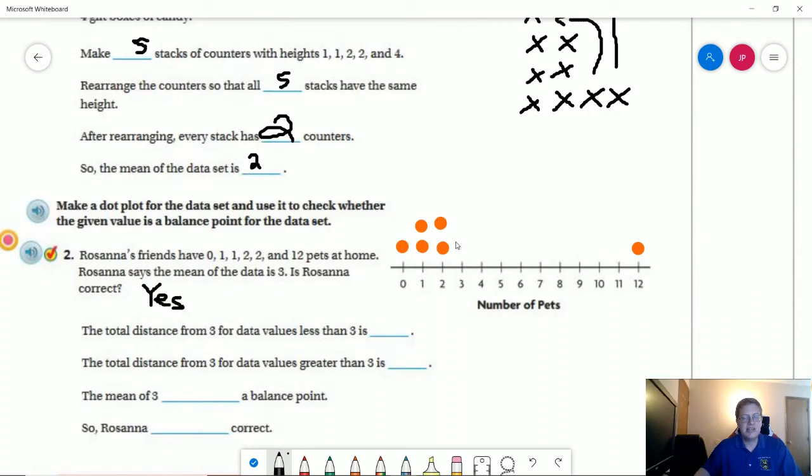Just because this is kind of the middle number of our options, the middle would probably be around 1.5. For the mean, we have to take the total of everything together divided by the number of data points that we're using. So the total distance from 3 for our values less than 3 is going to be 1, 2, 3, 4, 5, 6, 7, 8, 9.